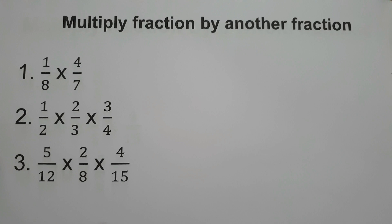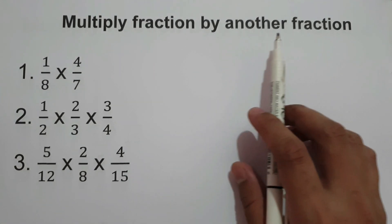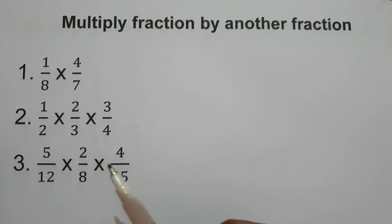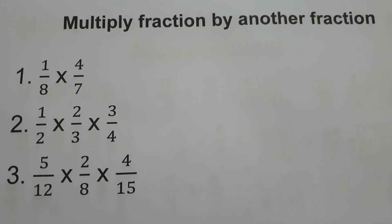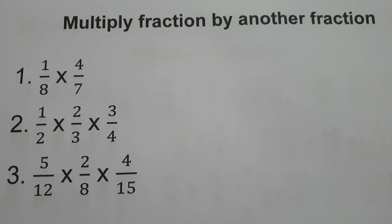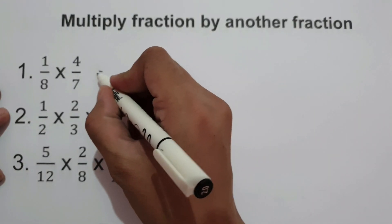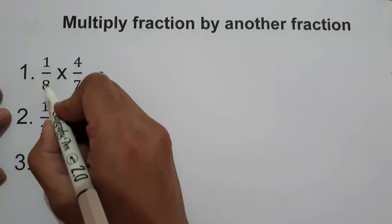For example, how to multiply a fraction by another fraction. What is the general rule? If you are going to multiply fractions, you simply multiply both numerators and both denominators — numerator to numerator and denominator to denominator.